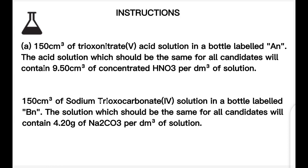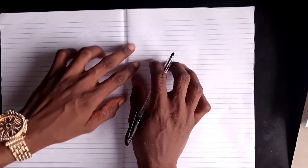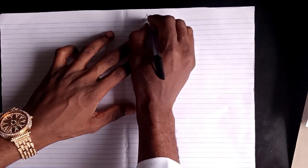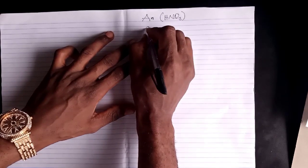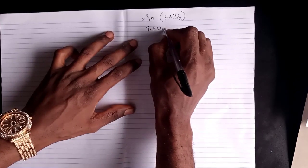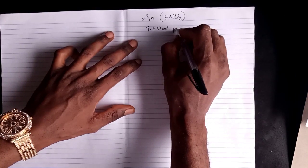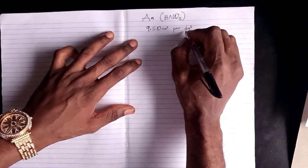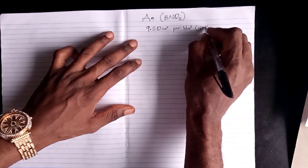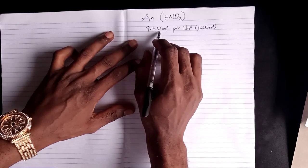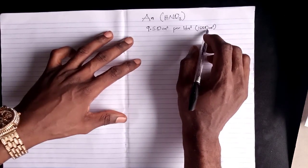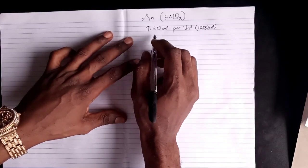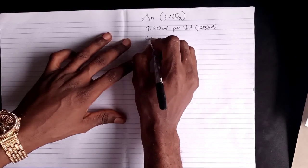The BN solution will contain 4.20 grams of sodium trioxocarbonate(IV) per dm³ of solution. Now we go over to the preparation aspect and how to calculate the concentration of each solution. For AN, which is your nitric acid HNO₃, the instruction says measure out 9.50 cm³ of the acid per dm³. One dm³ means 1000 cm³. So you measure out 9.50 cm³ of the acid, add it to water, and dilute to 1000 cm³.